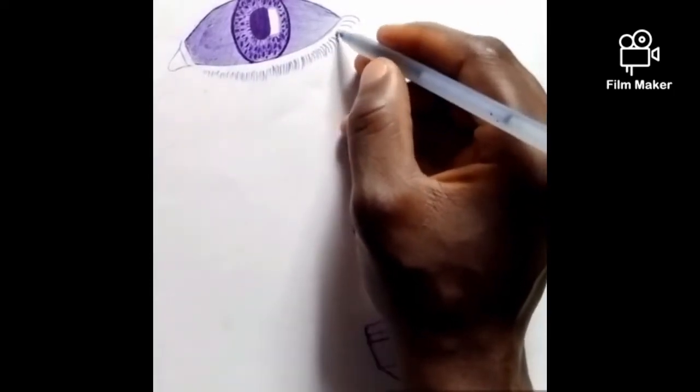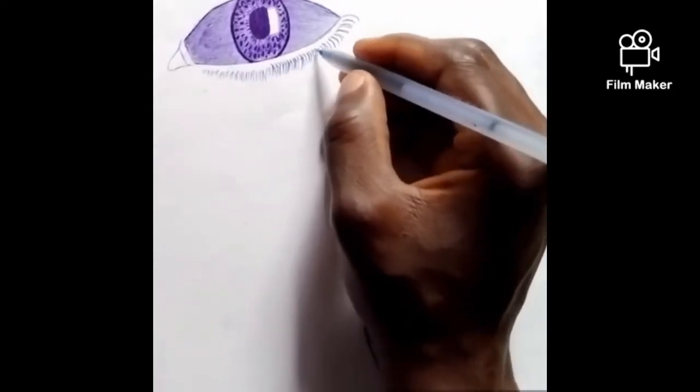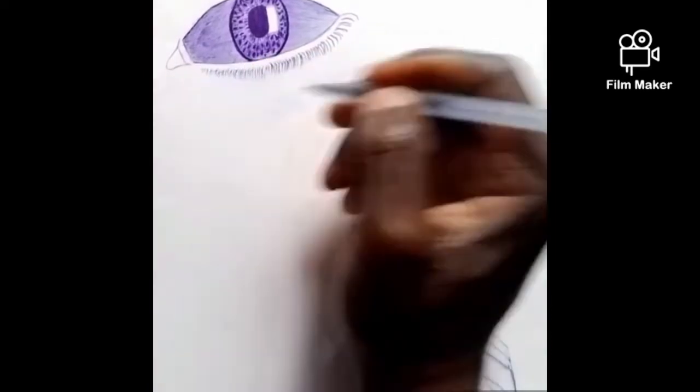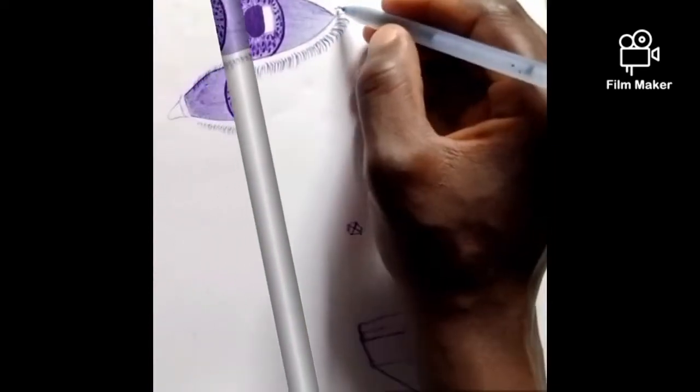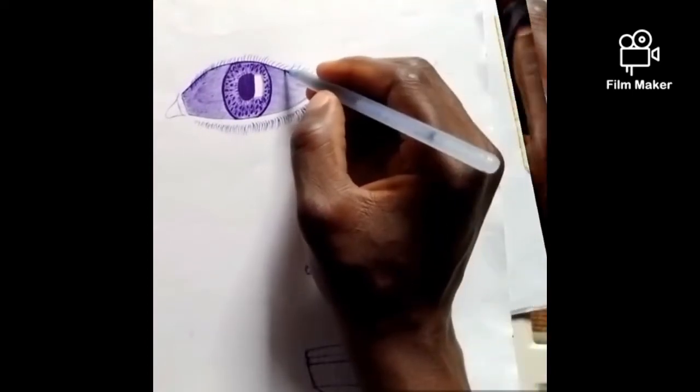Follow each line of the eye shadow you've drawn earlier, gradually with your pen again, to make it more realistic.